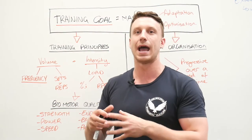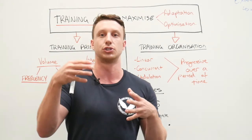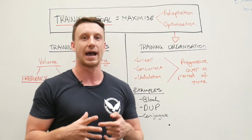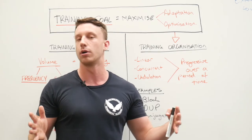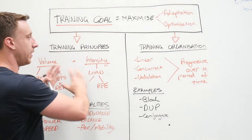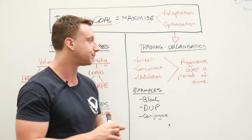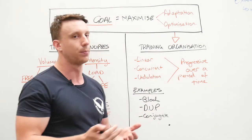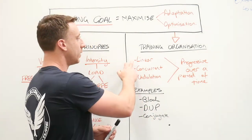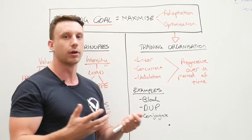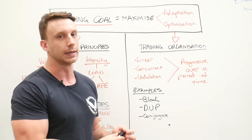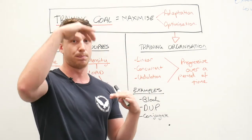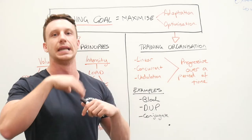Once we understand what the training principles are and how they interplay to get you to a desired outcome in terms of biomotor quality adaptation, we can look at how to actually organize a training program — say, a 12-week program — to use these variables to the best of their ability. Training organization, or periodization, can really only be broken down into three subcategories: linear programming, concurrent programming, and undulation. Every single program will fit somewhere across these three categories, though they're not really isolated — there are sections of all three in every style of program.